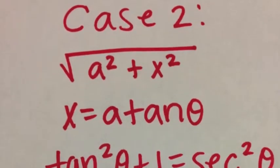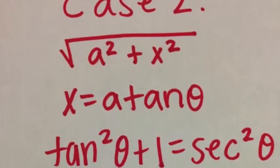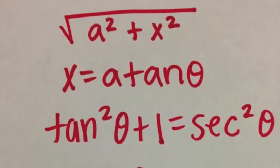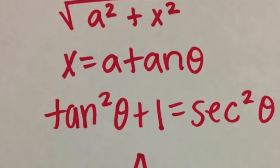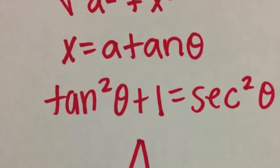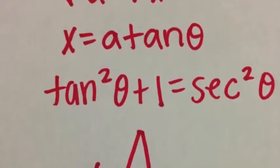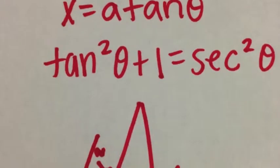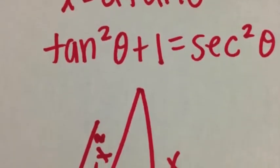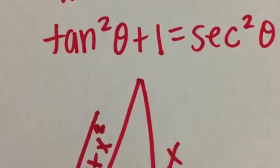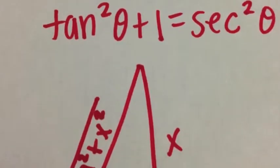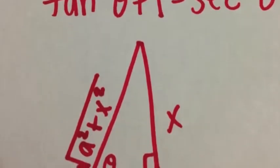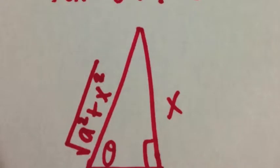In Case 2, we're going to have an integer being squared being added to a variable being squared. In this situation, we're going to set x equal to a tangent theta. Also, remember to take the square root of a before you plug in. Also, tangent squared theta plus 1 equals secant squared theta — that's going to come up a lot in integrals when we start to solve, so make sure you remember that formula. And here's the Pythagorean theorem, once again, to show you how to find tangent theta.